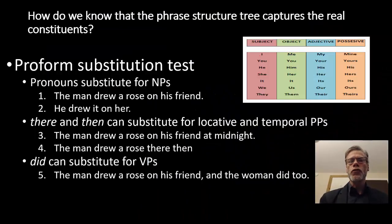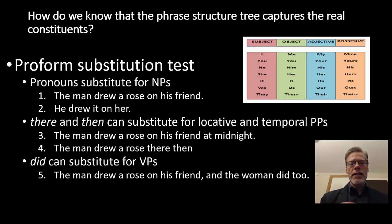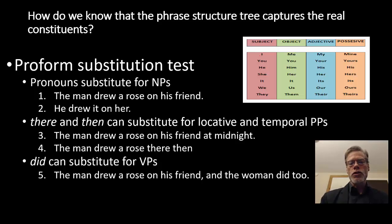Our first test is the proform substitution test. You've probably heard the term pronoun, but for linguists that's a misnomer — a pronoun is actually a pro-NP. It stands in for a noun phrase. So if we take the sentence 'the man drew a rose on his friend,' we can substitute pronouns for each noun phrase: the man becomes he, a rose becomes it, and his friend becomes her. So you get 'he drew it on her.' The fact that they have that substitutability with pronouns suggests that those are in fact constituents.